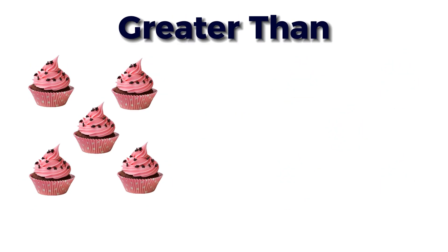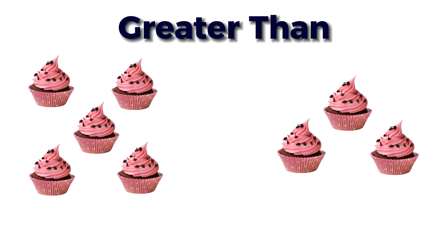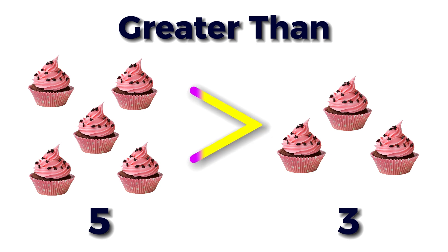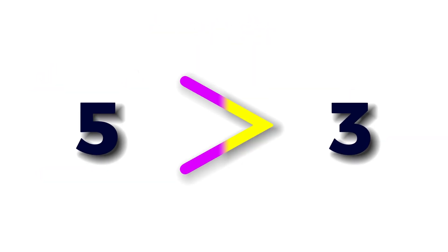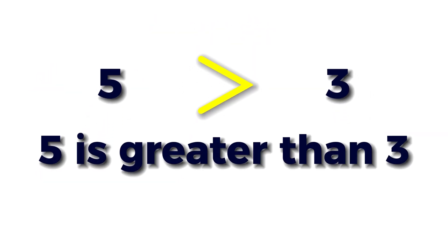There are five cupcakes on the left side and three on the right side. So the number on the left side is greater than the number on the right side. In maths, we use the greater than sign. We write it and read it as: five is greater than three.